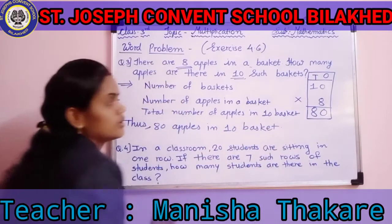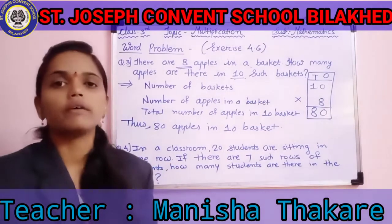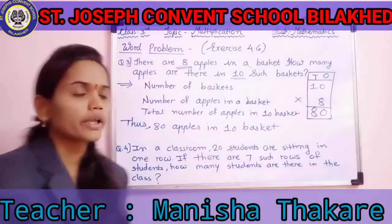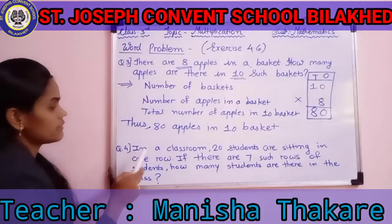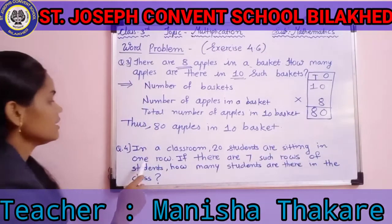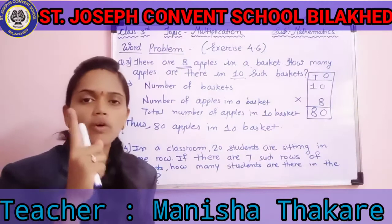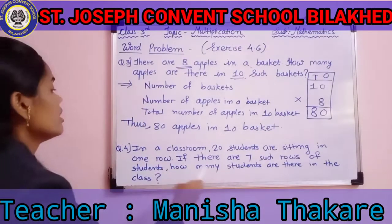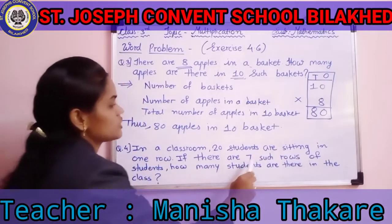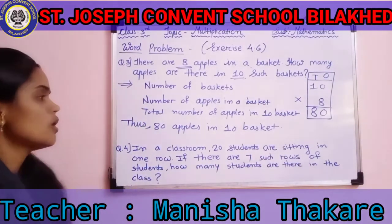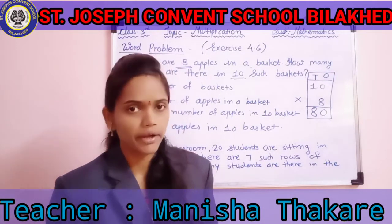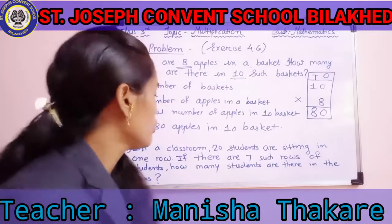Now the next question is question 4, also from Exercise 4.6. In a classroom, 20 students are sitting in one row. If there are 7 such rows, how many students are there in the class? So 7 rows are in the class, and we need to find out how many students in total. We will solve this problem.